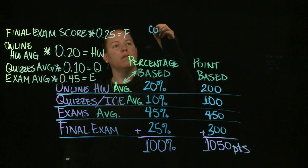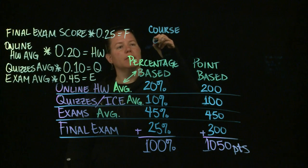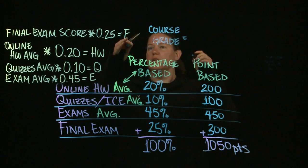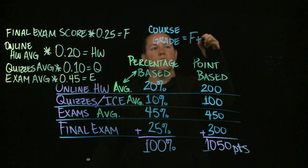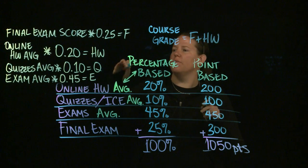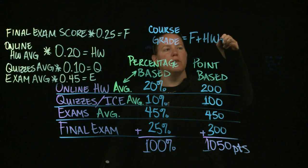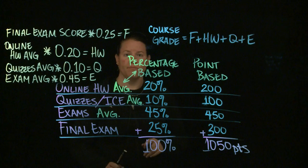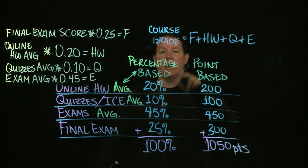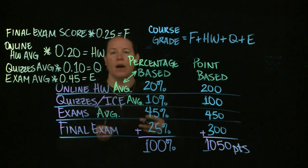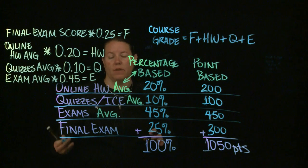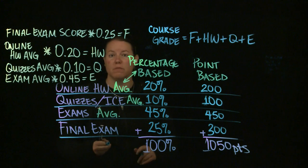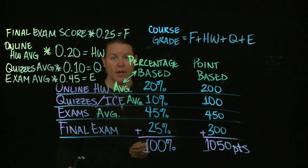If you want to find your final course grade, your course grade in a percentage-based class is just going to be these letters added to one another. Your F plus your HW plus your Q plus your E. That will tell you your percentage score. If you get a course grade of 90%, then you either have an A or an A minus. That's what that means.